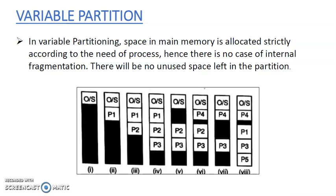The next one is external fragmentation. Suppose two free partitions of 30K and 50K are available, and a process of 60K has to be accommodated. Then both partitions cannot be allocated to this process, so there is again wastage of memory space. This is called external fragmentation. Another disadvantage is that the time complexity is very low because allocation and deallocation routines are simple as the partitions are fixed, and the access time is not very high.